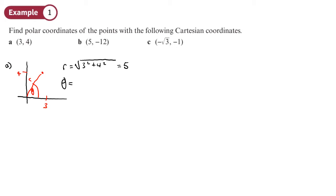For theta, we do arctan (remembering to work in radians) of opposite over adjacent: arctan(4/3). Let's make sure we're in radians: shift tan of 4/3, and we'll round to three significant figures — giving us 0.927. So we write the polar coordinates as (5, 0.927).